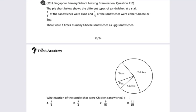All right, this is extensive exercise 2 from lesson 3. The question is: the pie chart below shows the different types of sandwiches at the store. One-fifth of the sandwiches were tuna and one-quarter of the sandwiches were either cheese or eggs. There were three times as many cheese sandwiches as egg sandwiches. What fraction of the sandwiches were chicken sandwiches?